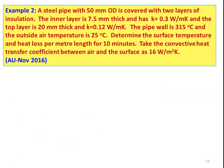Example 2, from Anna University November 2016: A steel pipe with 50 mm OD is covered with two layers of insulation. The inner layer is 7.5 mm thick with thermal conductivity 0.3 W/m·K, and the outer layer is 20 mm thick with thermal conductivity 0.12 W/m·K. The pipe wall is at 350°C and outside air is at 25°C. Determine the surface temperatures and heat loss per meter length for 10 minutes, with convective heat transfer coefficient 16 W/m²·K.